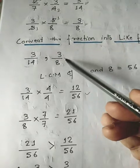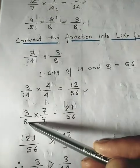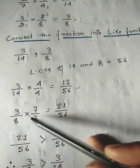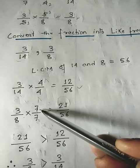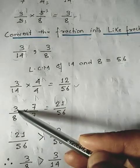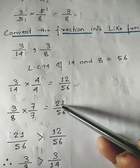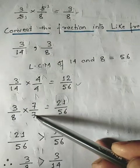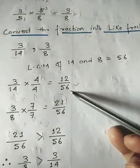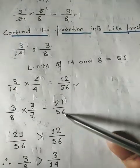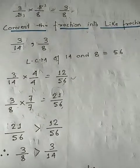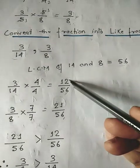For the second fraction 3/8, divide 56 by 8 — the answer is 7. Multiply both numerator and denominator by 7: 7 threes are 21, and 7 eights are 56. So 3/8 becomes 21/56. Now both fractions have the same denominator, making it easy to compare.